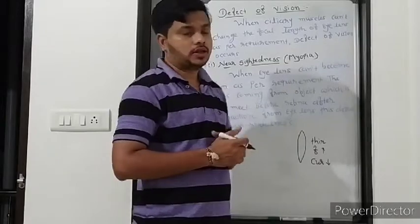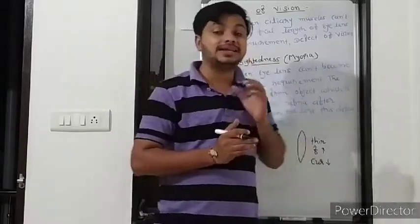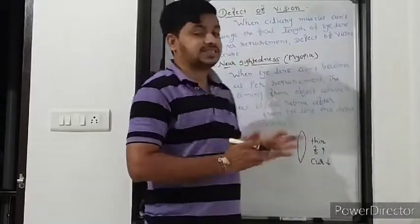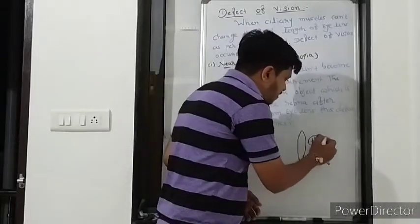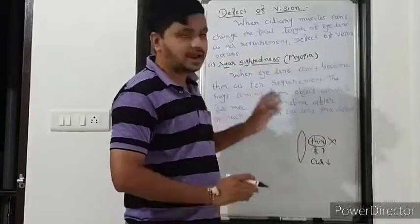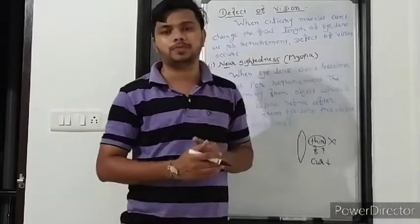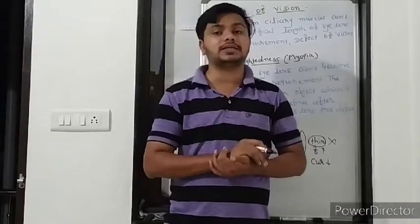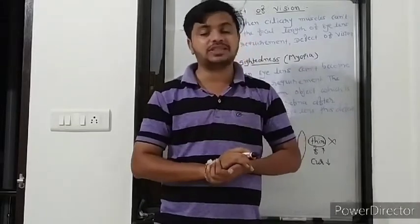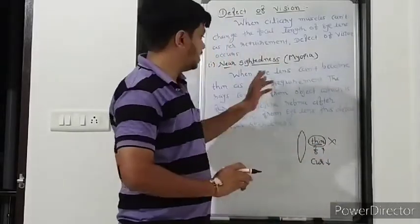In this defect, the eye lens can't become thin as per requirement. If it can't become thin, then the focal length can't be increased. If it is not increased, the object can't be seen clearly. Because this lens can't become thin, the light rays coming from a far object can't be focused properly, and the image is formed before the retina.